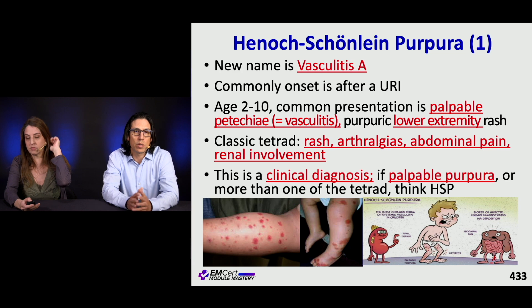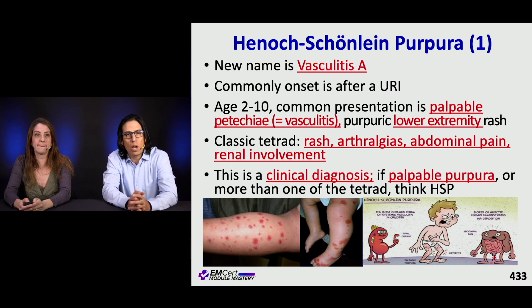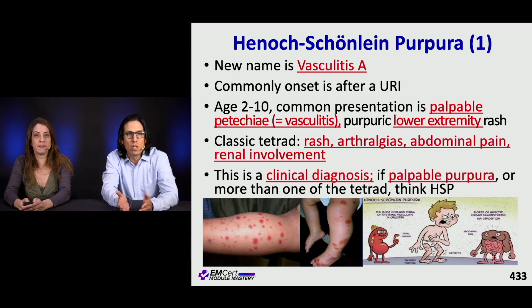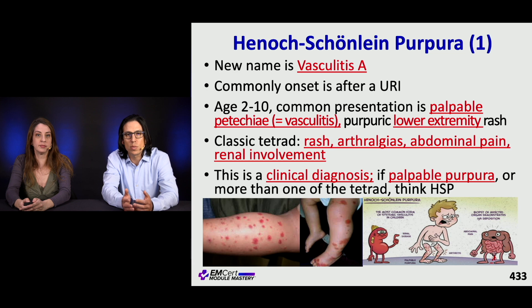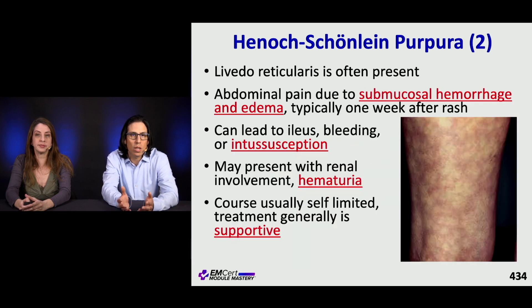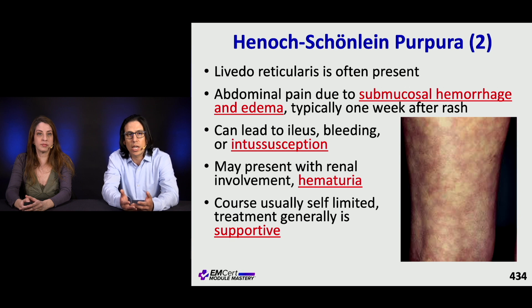Henoch-Schönlein purpura — now called IgA vasculitis — commonly occurs after URI in young kids aged two to ten. The classic presentation is palpable purpura. Anytime you have non-palpable purpura, it's often a platelet disorder; palpable purpura suggests vasculitis. The classic tetrad is rash, arthralgias, belly pain, and renal involvement — not everybody gets all four, and it's a clinical diagnosis. There's often livedo reticularis. Abdominal pain is due to submucosal hemorrhage and edema, usually occurring about a week after the rash, and can lead to intussusception. Treatment is generally supportive as it's usually self-limited.